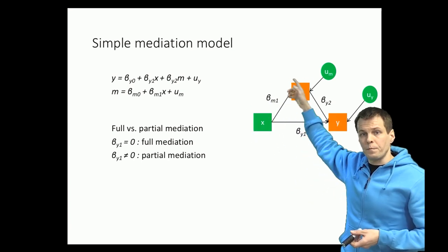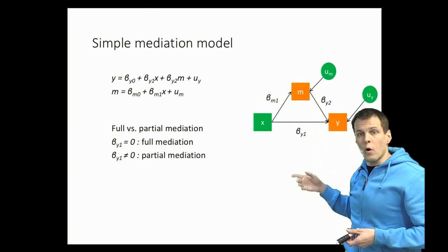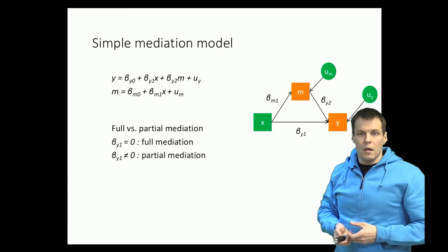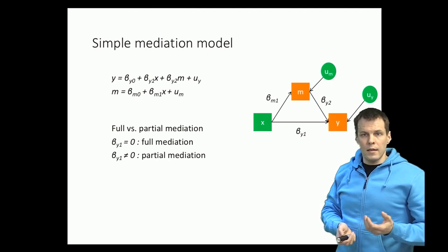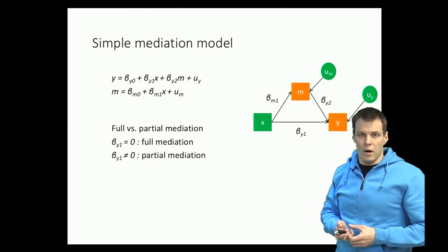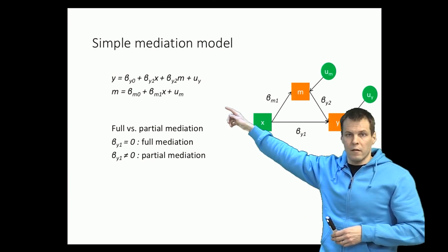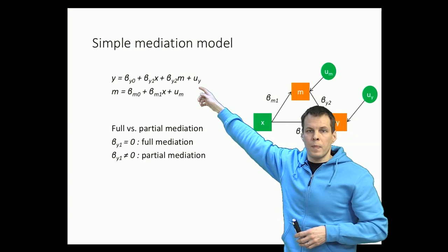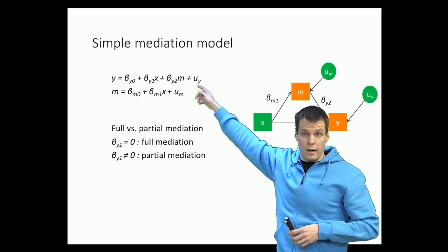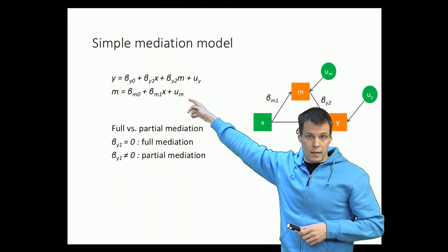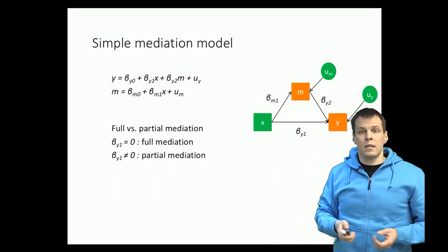We try to understand these processes, model how x influences y. The estimation of this kind of model requires that you estimate two regression models basically. We have the first model, y is the function of x and m, and then you have m as a function of x. So how do we estimate these models? There are two main estimation strategies.